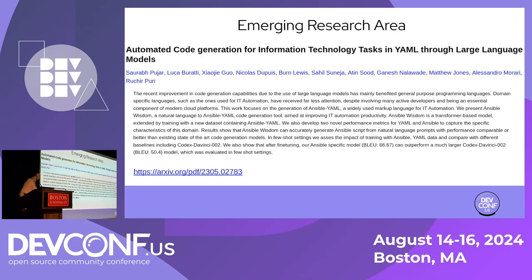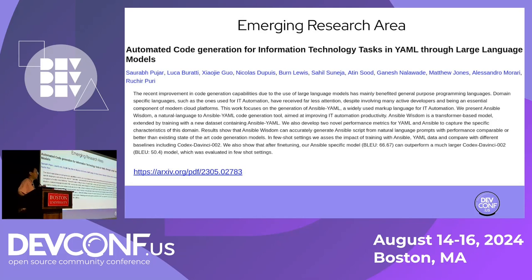This paper, published this year, on translating natural languages into YAML configuration is in the emerging research area. They used CodeGen as the checkpoint pre-trained model and fine-tuned on Ansible YAML files from Galaxy. Honestly, their results are not as good as the model I trained — I'll show you later. But I also adopted a lot of approaches from this paper, like evaluation metrics and how to test and train the model.